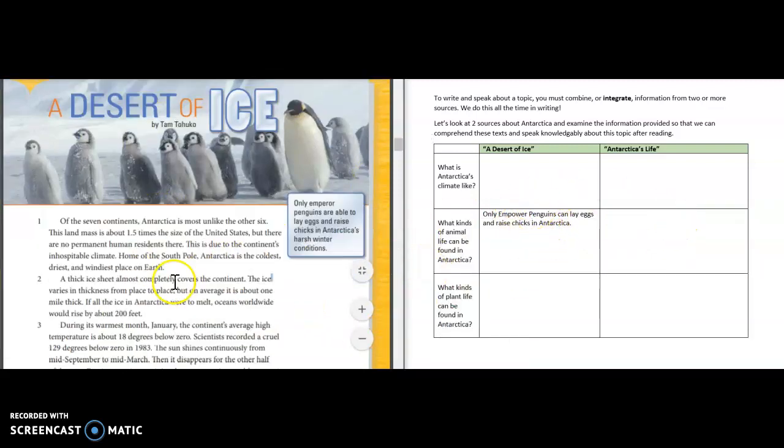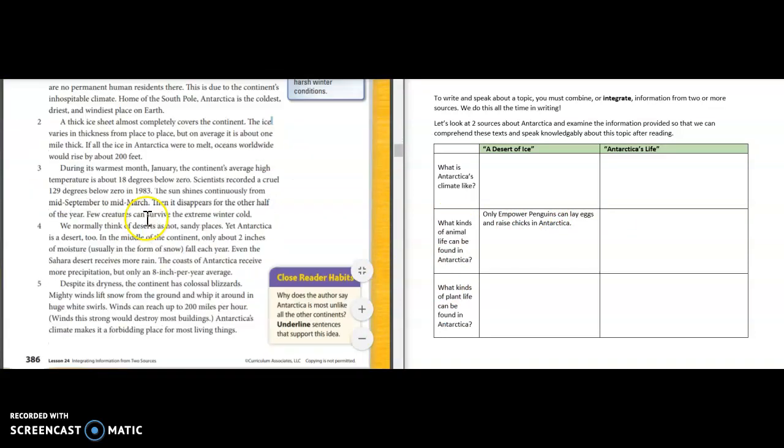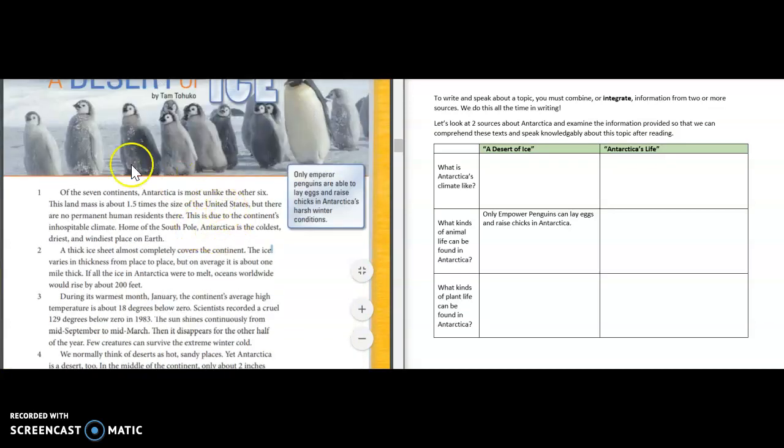Let's continue. So now we're on paragraph one. I don't see any other non-fiction text features in this article, so I'm going to start reading up here. Of the seven continents, Antarctica is most unlike the other six. This land mass is about 1.5 times the size of the United States, so it's much larger than the U.S., but there are no permanent human residents here. This is due to the continent's inhospitable climate. Well that's a word that I'm not necessarily familiar with. Let me continue reading and see if there's any context clues that'll help me figure out that unknown word.